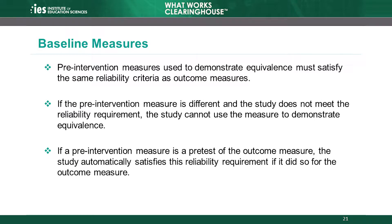Recall that in Module 3, Baseline Equivalence, we discussed how the WWC uses pre-intervention or baseline measures to assess equivalence of the intervention and comparison groups. The WWC also applies the reliability criteria for outcome measures to these baseline measures used to demonstrate equivalence. Pre-intervention measures used to demonstrate equivalence must satisfy the same reliability criteria as outcome measures.